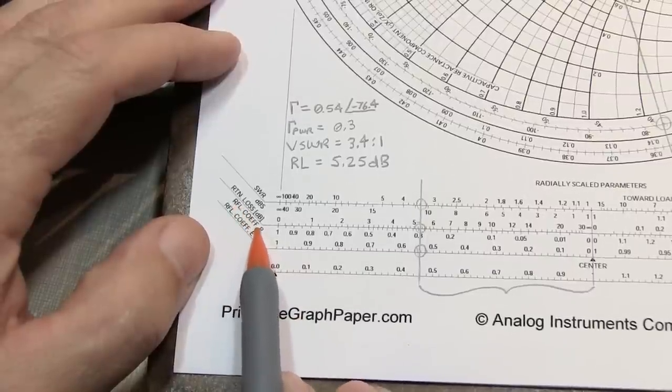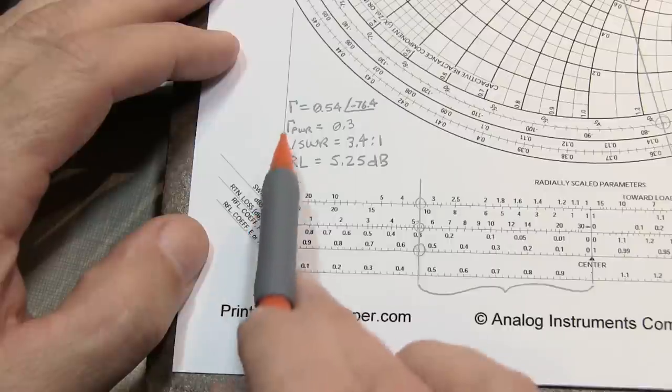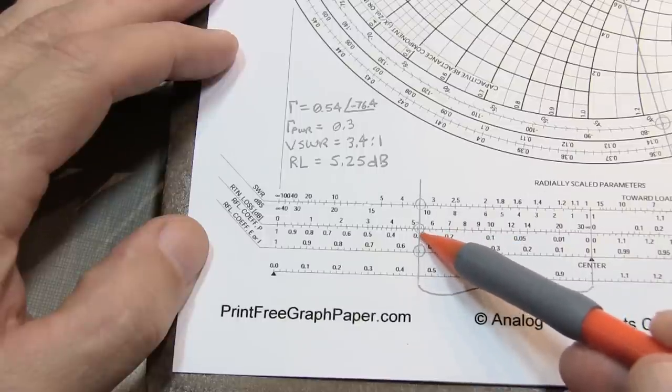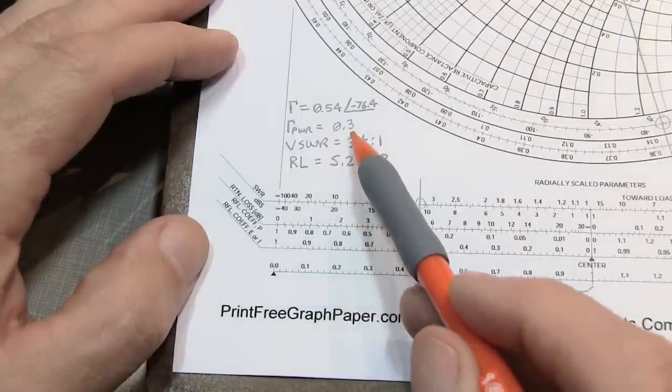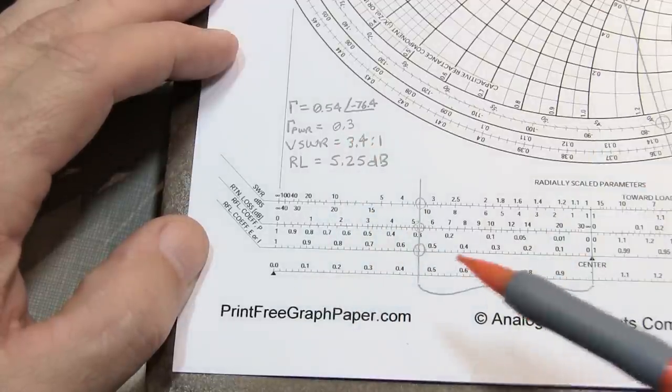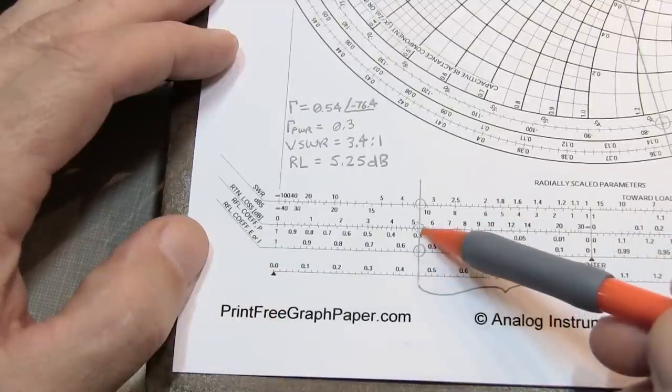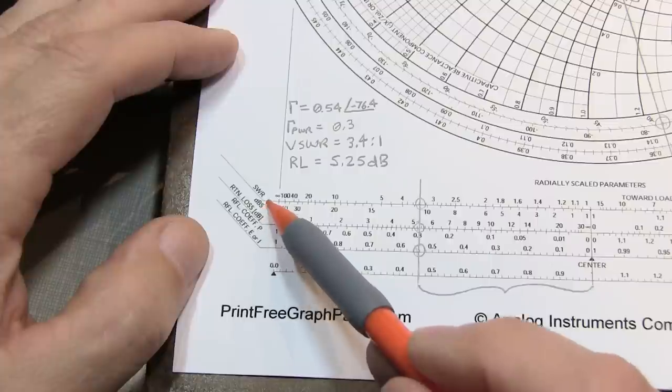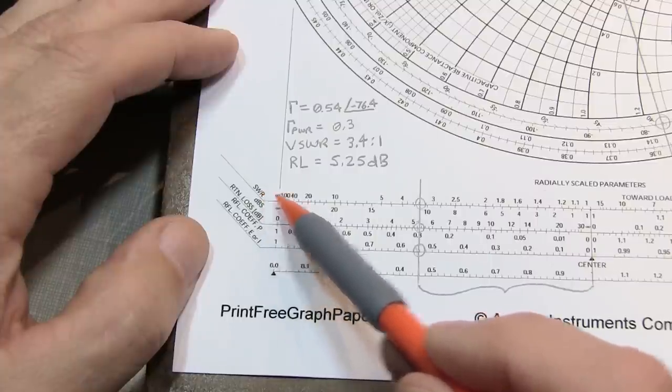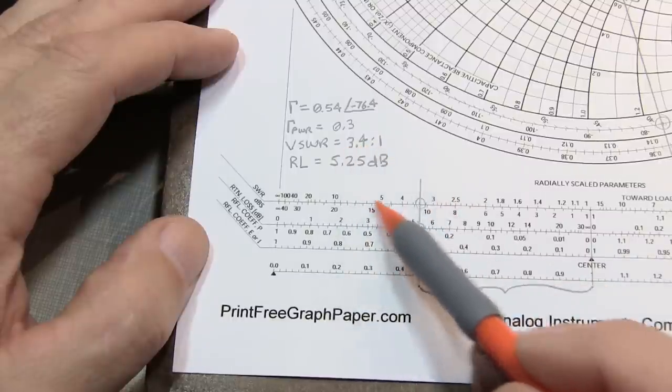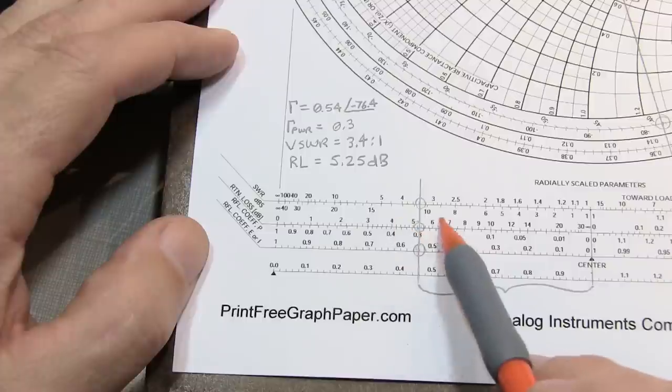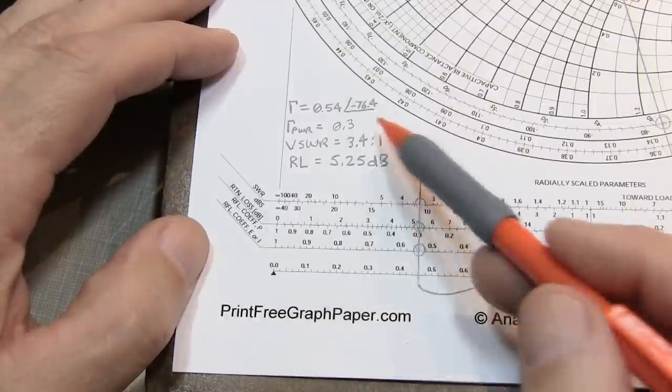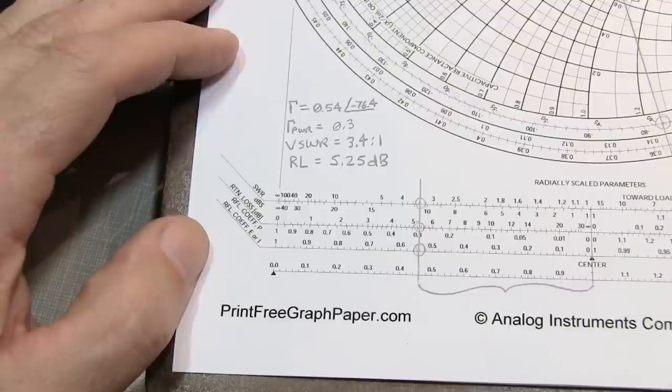The next axis up is our power reflection coefficient, simply the square of gamma, which is about 0.29, meaning basically 30% of your power is reflected. Next is return loss at about 5.25 dB. The next scales are for SWR - the top one is linear crossing at about 3.4, so our SWR is 3.4 to 1. Represented in dB, it's about 10.6 or 10.7 dB. Very easy to extract these parameters right off the Smith chart without calculations.